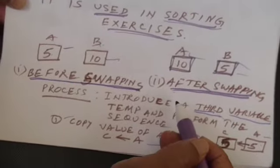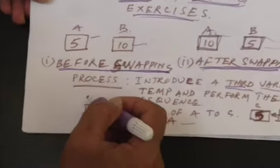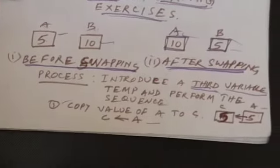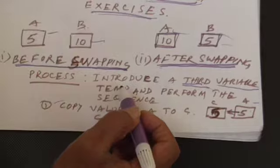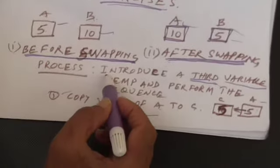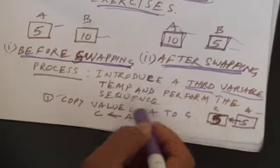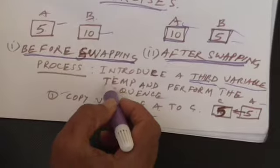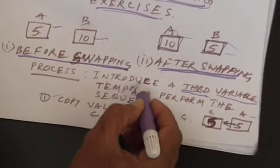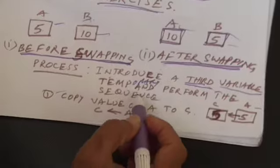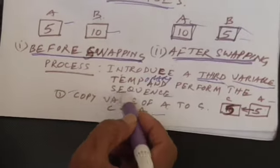So how is the process done? There are a number of ways of doing it, but a very comfortable one is introducing a third variable — a temporary variable — and performing a sequence of steps.